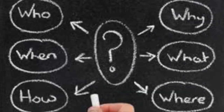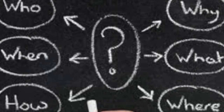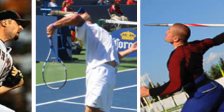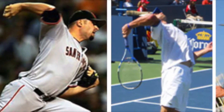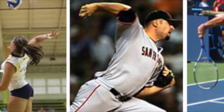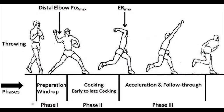So the next question is, who does this affect and why? UCL injuries tend to affect overhead athletes like javelin throwers, tennis players, baseball and softball players, and volleyball players. This is due to repetitive valgus force on the medial elbow during the late cocking and early acceleration phase of throwing.